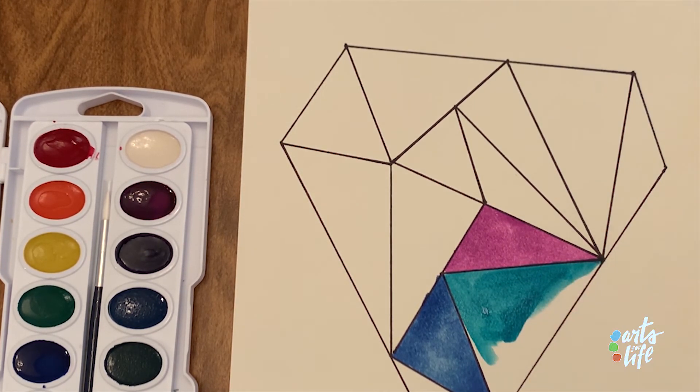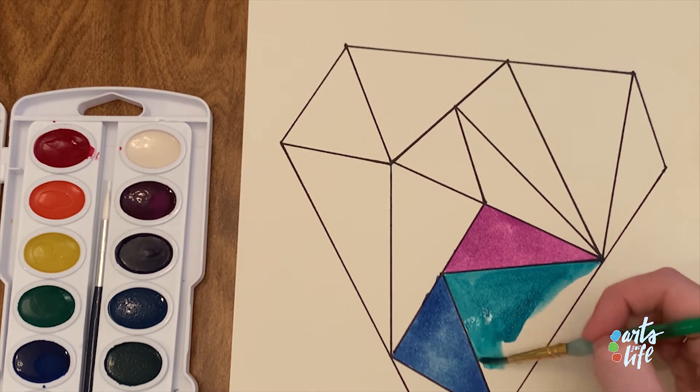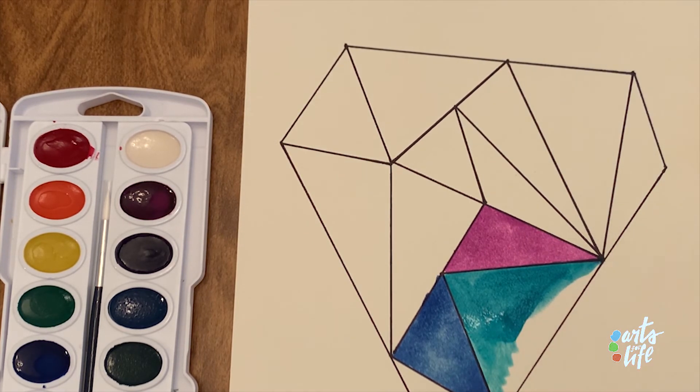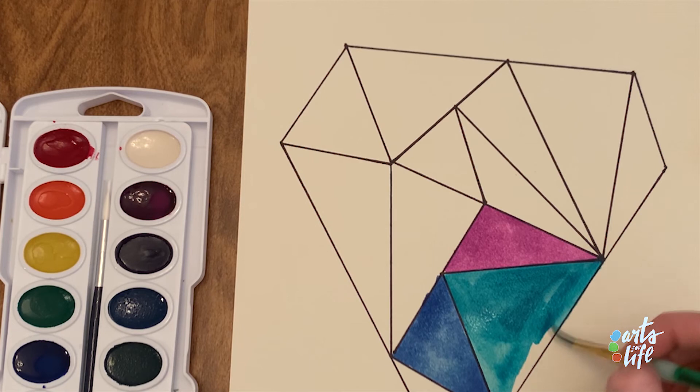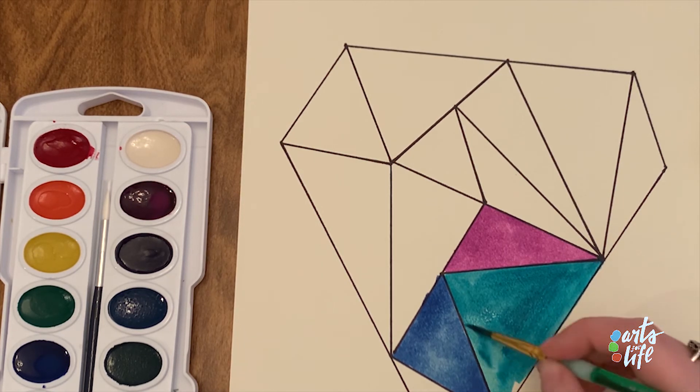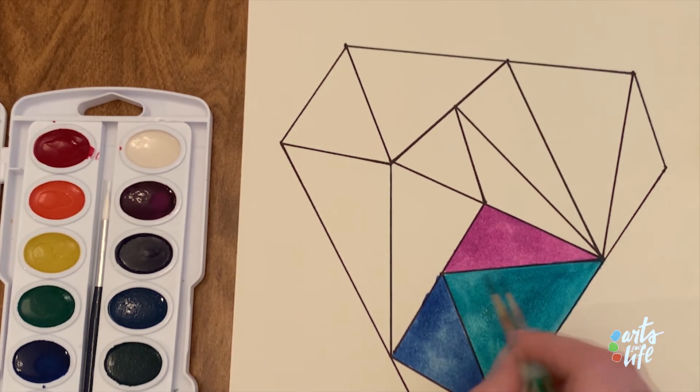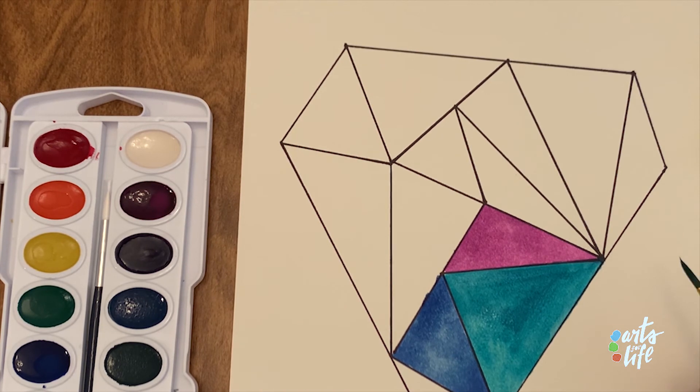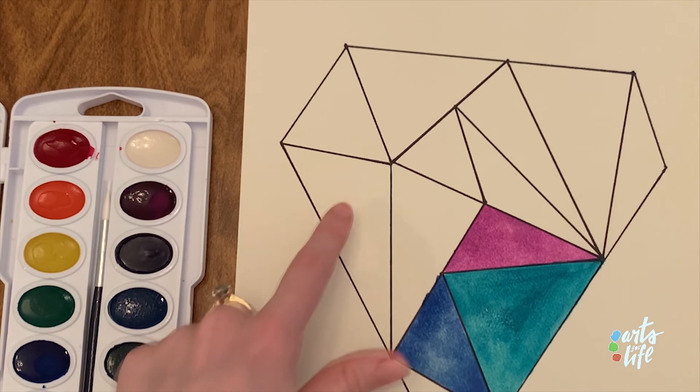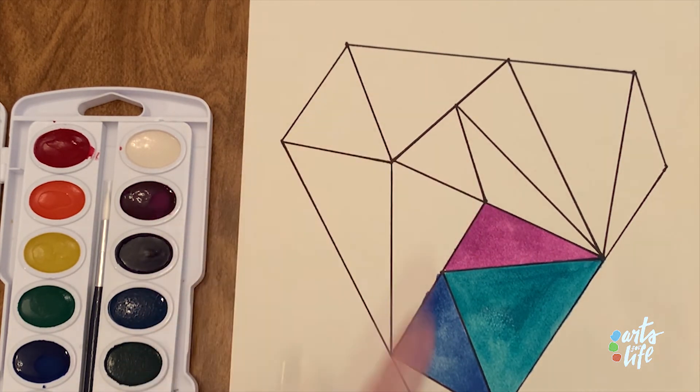I really like these three colors together. I think they go really nicely. Just adding a little bit more paint as we continue. All right, so now that I've painted in three of the shapes, I have several more to go. But you would just follow this same process until every single shape was colored or painted.